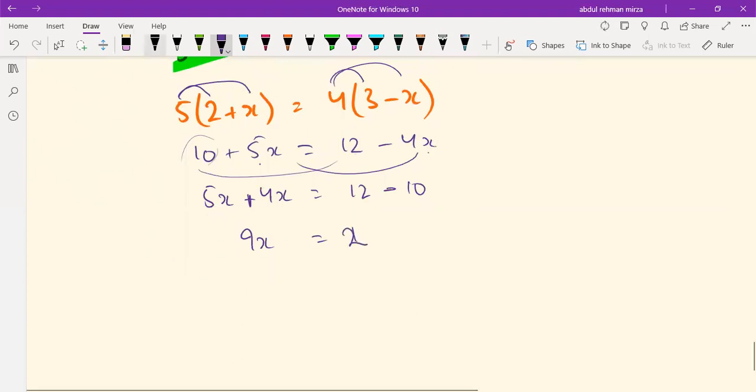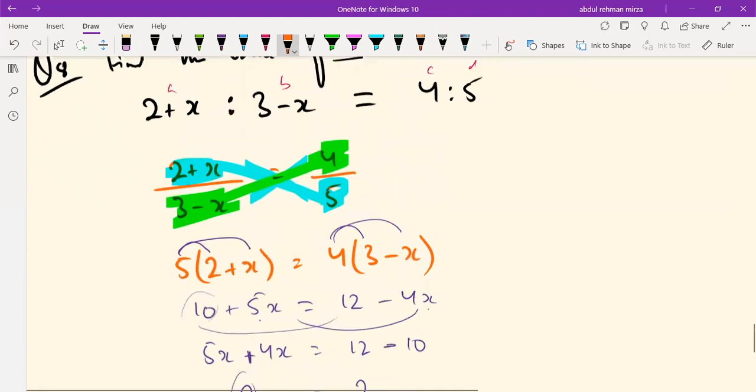So, x is equal to 2 upon 9. This means we have found the x value for this question.